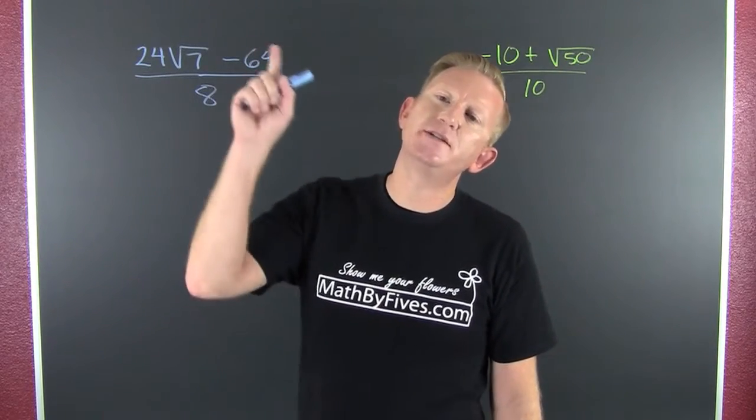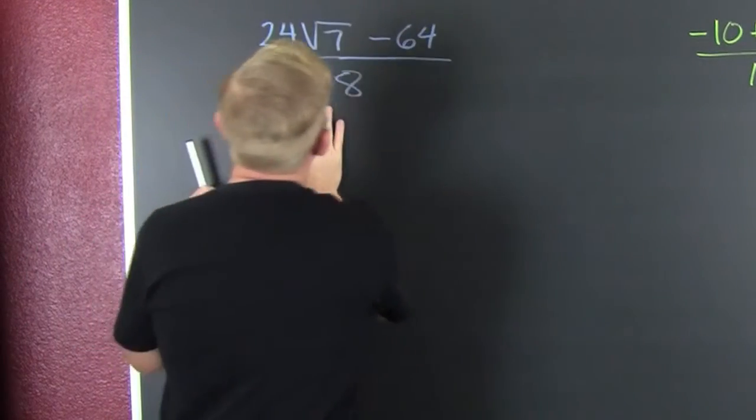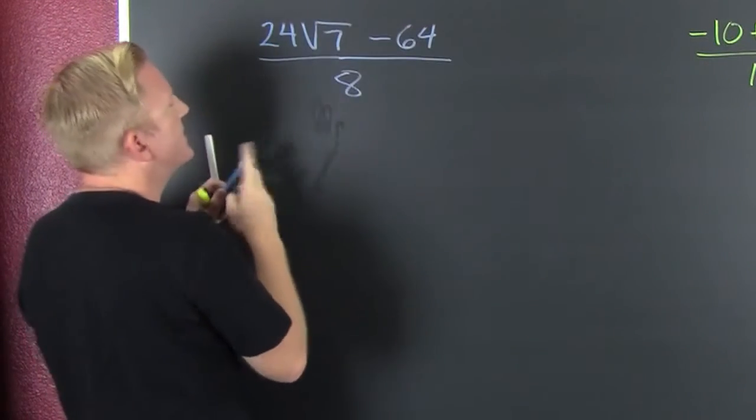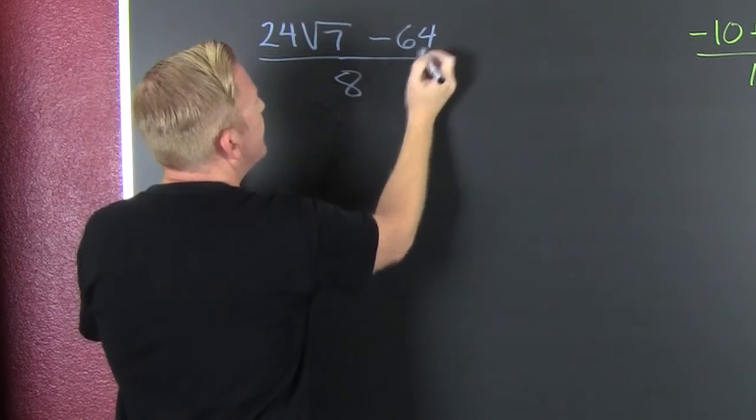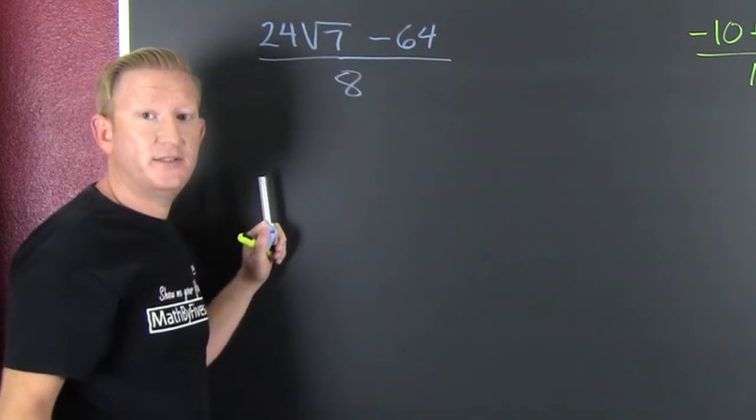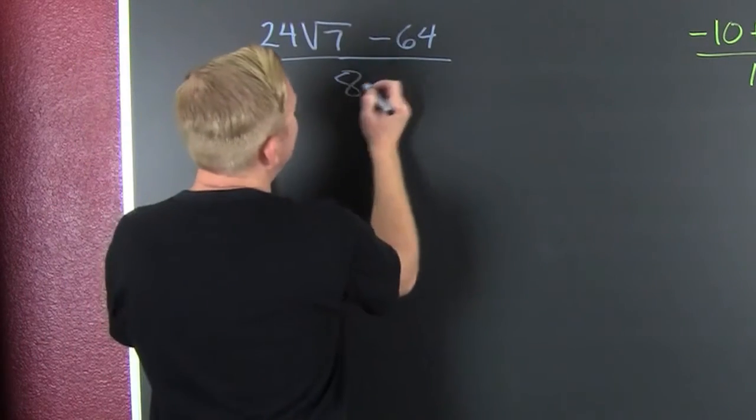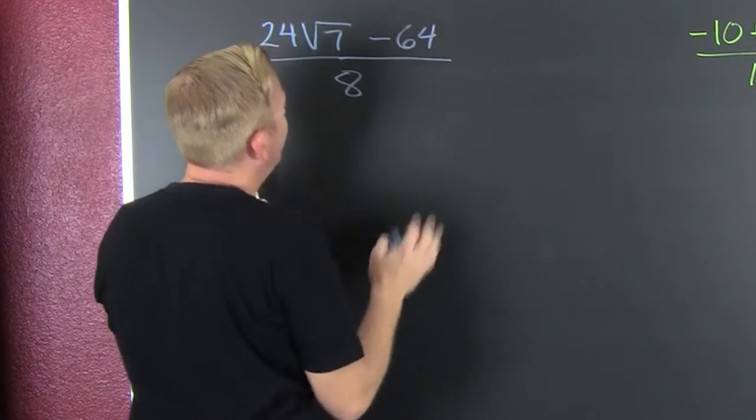We're simplifying these radical expressions, but wait, there's more. I'm over here looking at this. Can I just reduce that 8 and that 64? I'm only making this video because I see this far too often. Can I simplify that 8 and that 64?